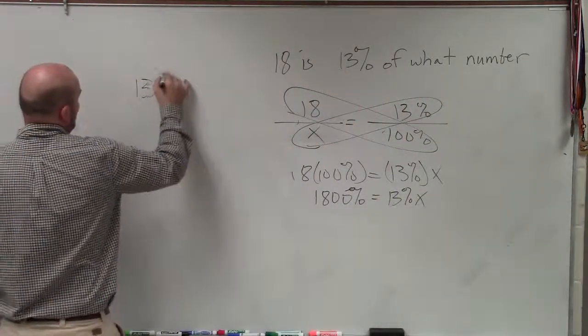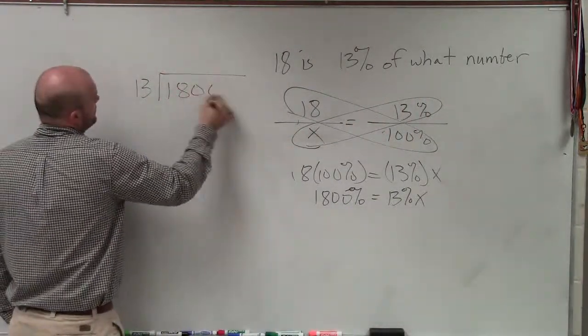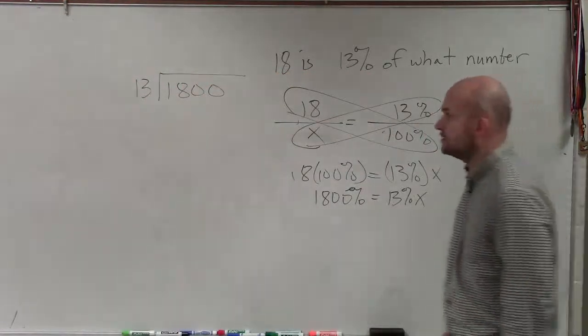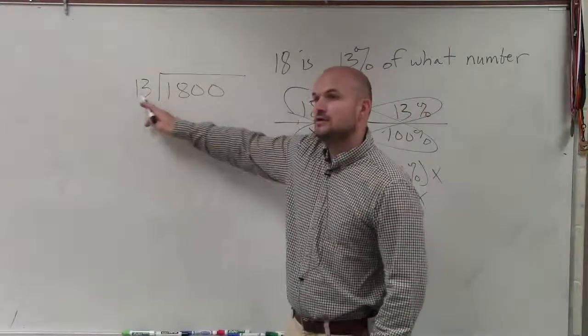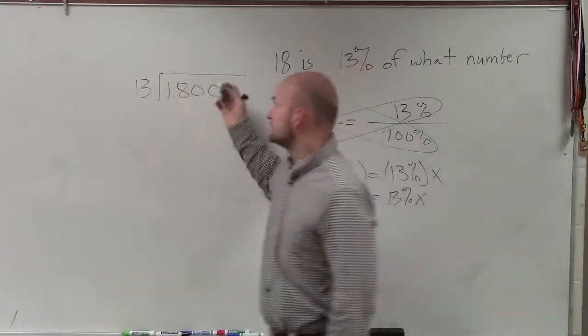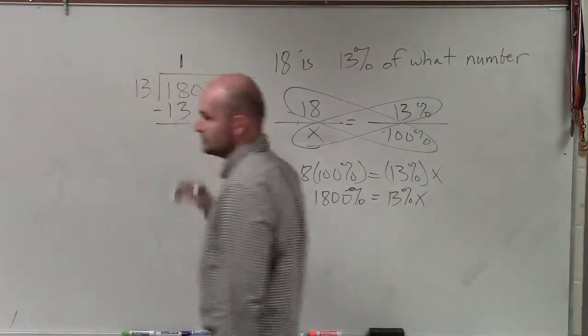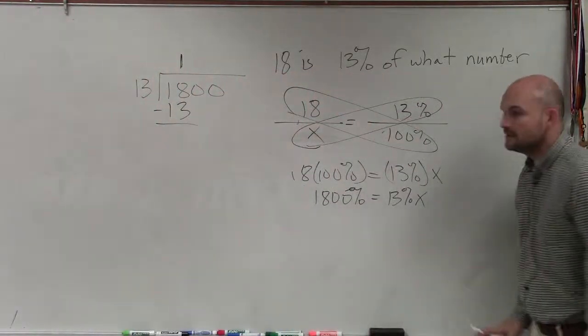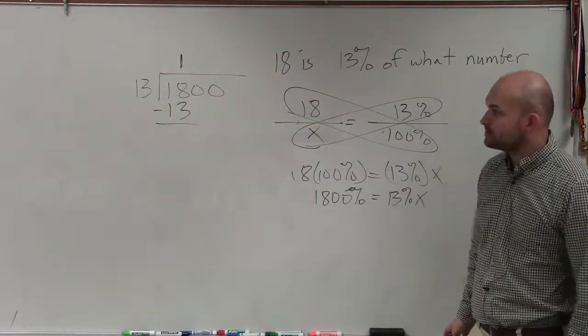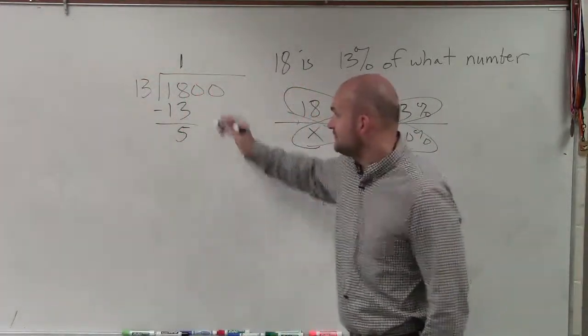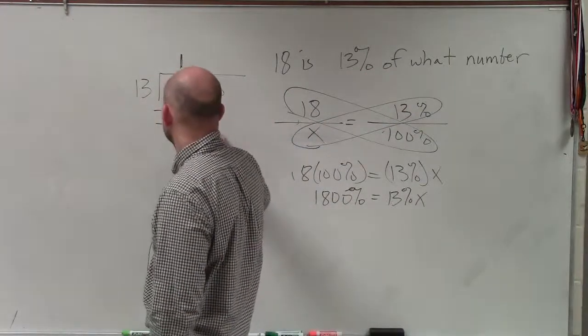So let's go back to our long division. How many times does 13 go into 1,800? Well, 13 doesn't go into 1, so we go to 18. 13 goes into 18 one time. 1 times 13 is 13.